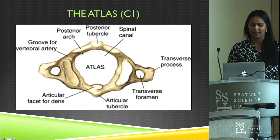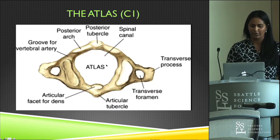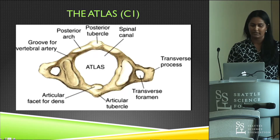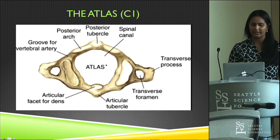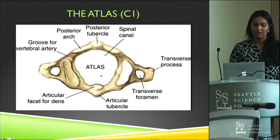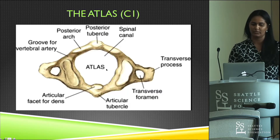Here you have this wide ring shape which is your vertebral foramen. If you imagine a transverse ligament of your atlas running here, it would slightly divide this ring into a smaller anterior part — where the dens of the axis sits — and a larger posterior part where your spinal cord runs.